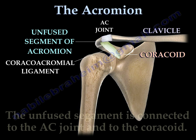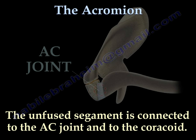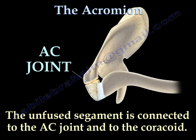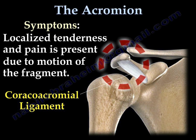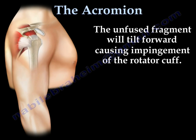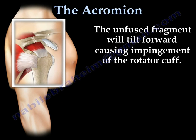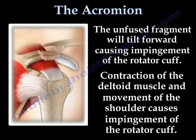The unfused segment is connected to the AC joint and to the coracoid. This may cause movement of the unfused segment. Symptoms include localized tenderness and pain due to motion of the fragment. The unfused segment will tilt forward, causing impingement of the rotator cuff. Contraction of the deltoid muscle and movement of the shoulder causes impingement of the rotator cuff.